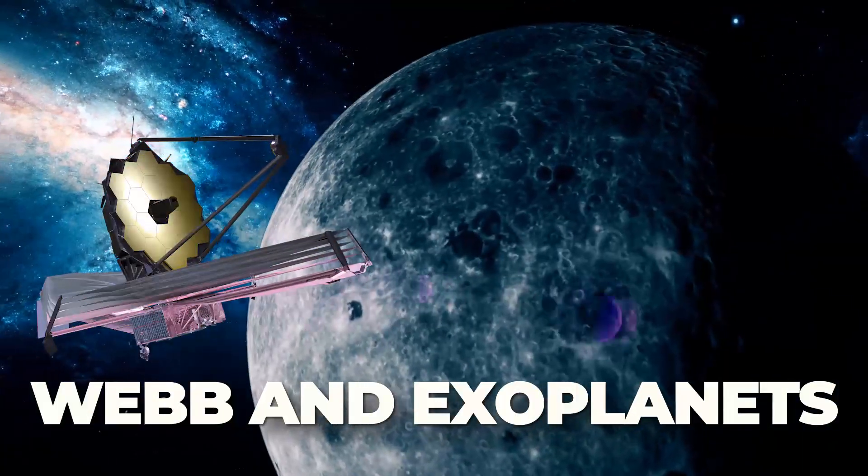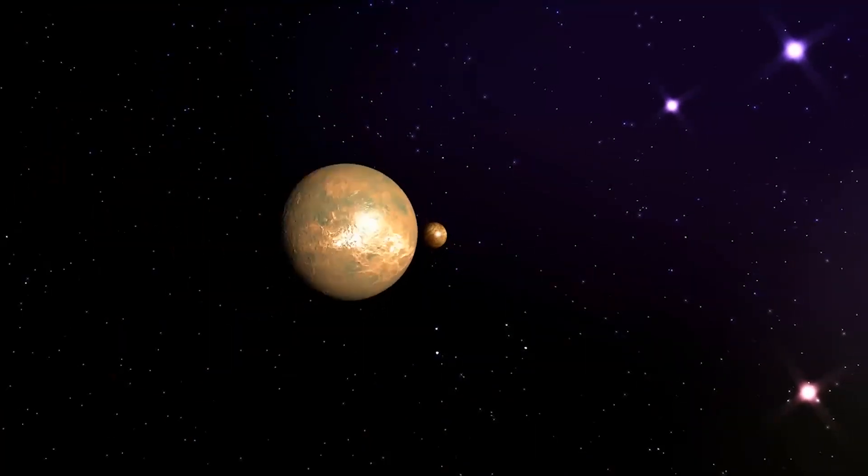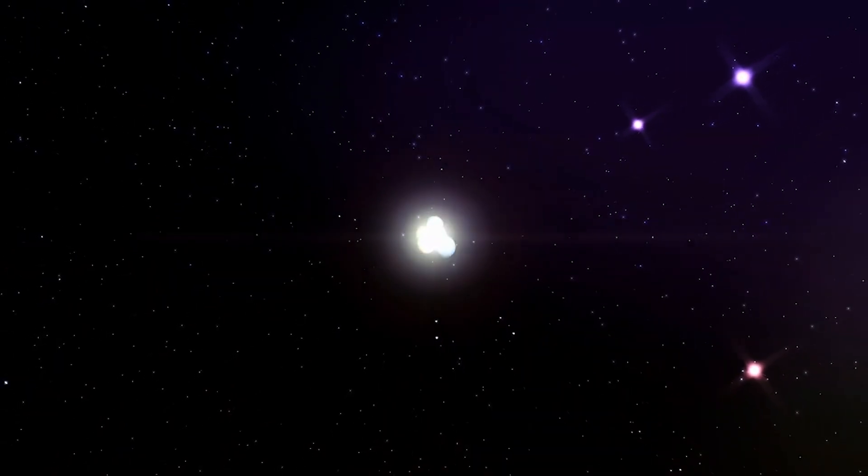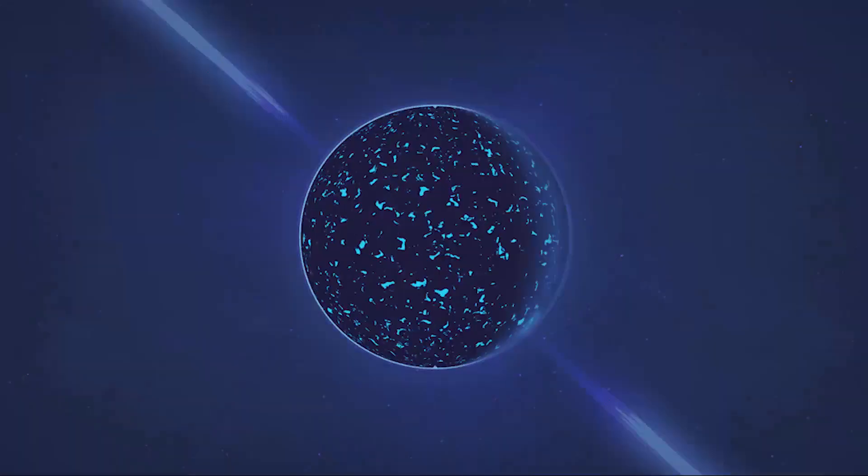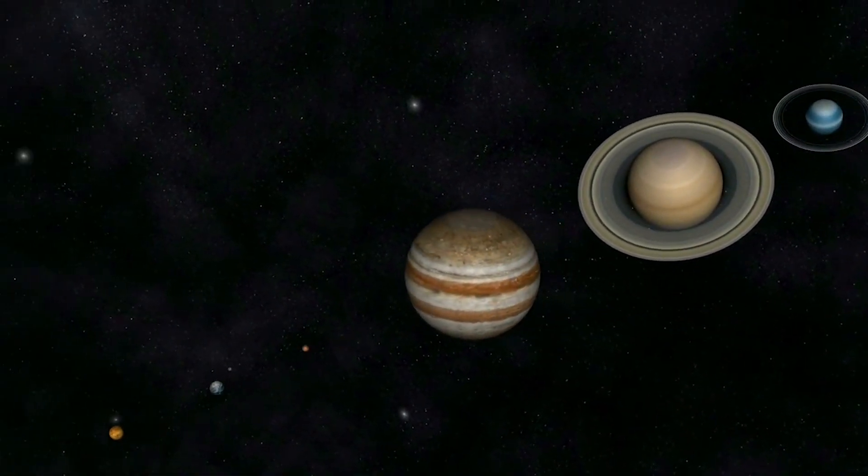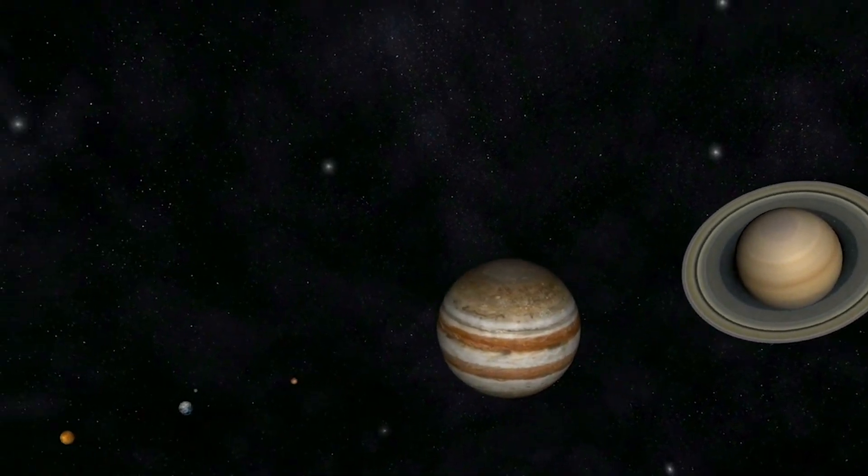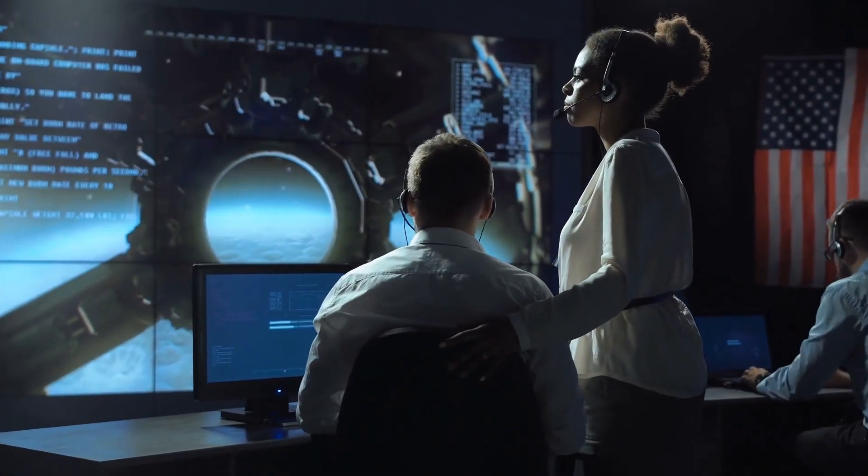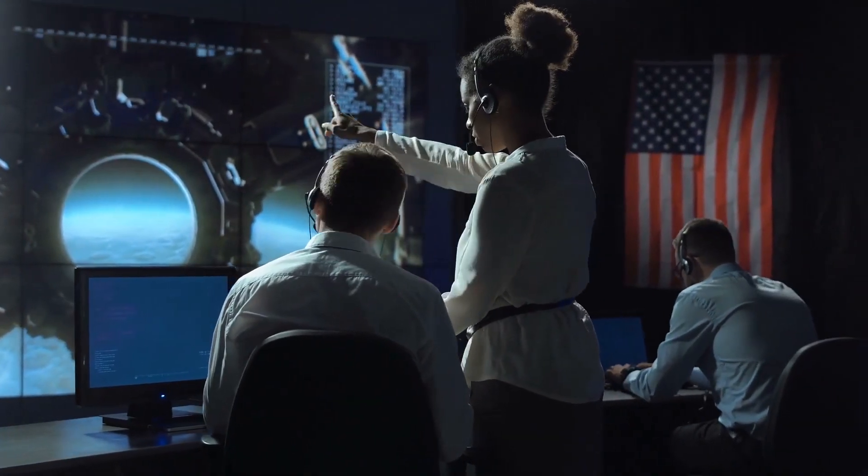The first solar system discovered outside of our own did not include the main-sequence star like our own, but rather a pulsar, which is a fast-rotating star. Since then, scientists have discovered hundreds of exoplanets in every kind of star system possible, and they are continuing to focus their efforts on finding smaller and more Earth-like planets soon.